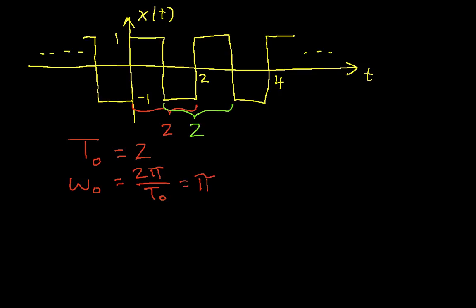With this, we're in a position to begin computing the complex exponential Fourier series coefficients. We'll start with the easy one, C0, which is actually just the average of the waveform, so I can write it as 1 over 2, that's T0, times the integral over 1 period of the waveform of X of T.